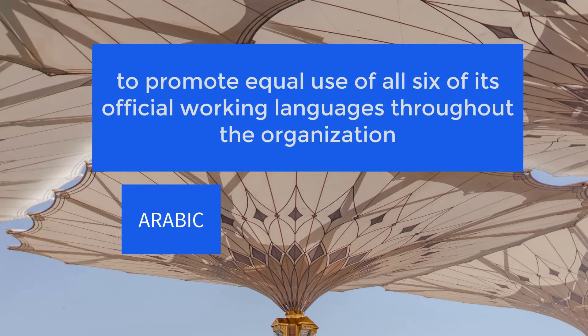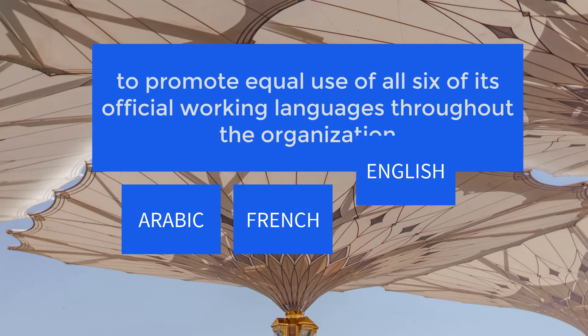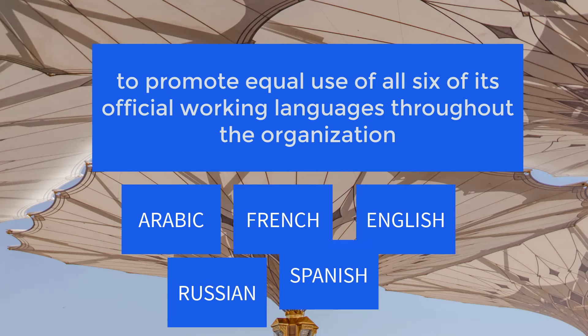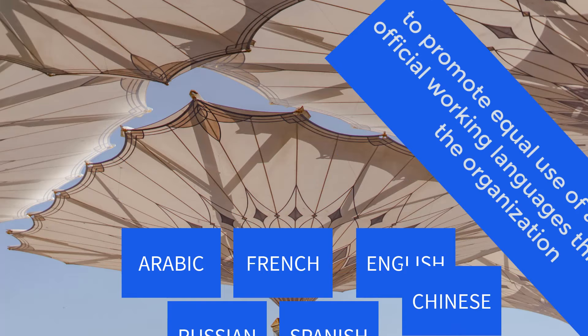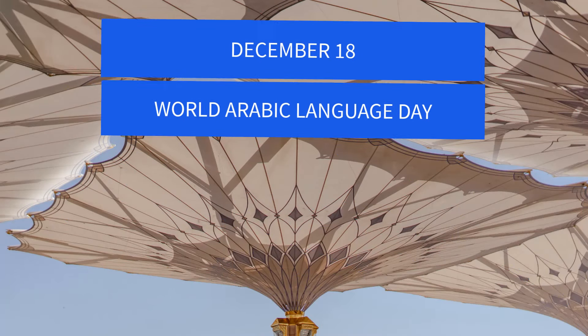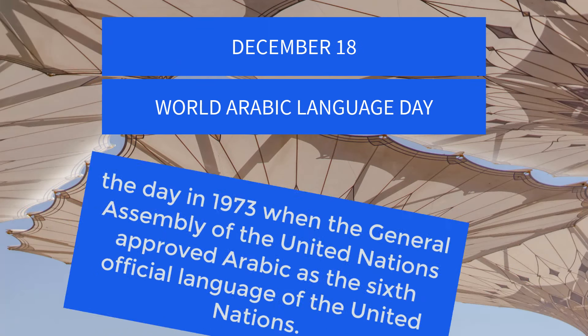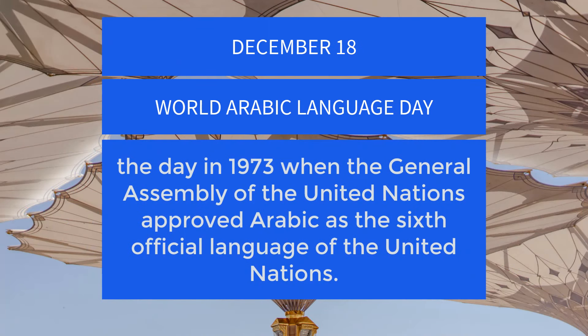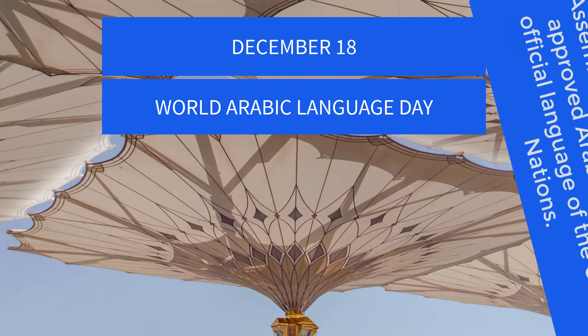The other official languages of the United Nations are French, English, Russian, Spanish, and Chinese. December 18 is the day in 1973 when the General Assembly of the United Nations approved Arabic as the sixth official language of the United Nations.